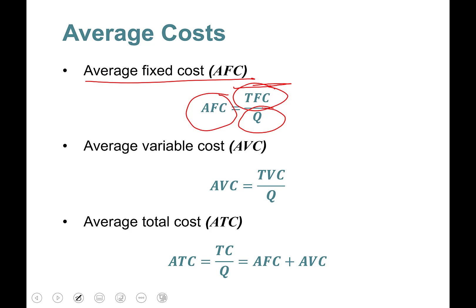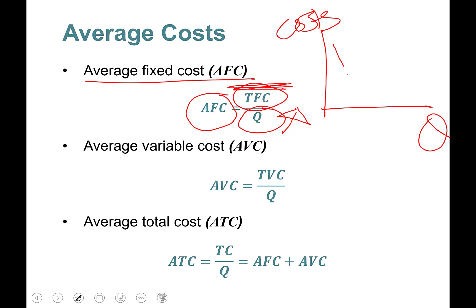Total fixed cost is fixed — I'll put a bar on top of it. As you produce more and more, average fixed cost will look like this on a graph. As quantity goes to infinity, average fixed cost converges to zero.